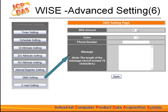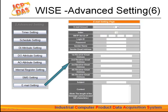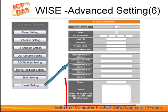This function allows sending pre-input messages to preset mobile phone numbers under certain conditions. You can set up a maximum of 12 messages. Finally, we come to the email setting. You can set up the IP for the SMTP server, then enter the email account and password, then enter the sender's name. You can send to up to 5 receivers, then input the email subject and content.